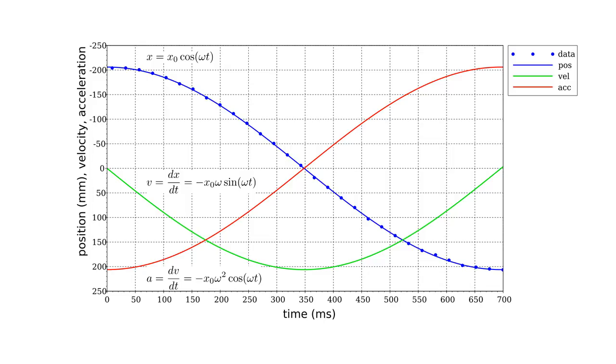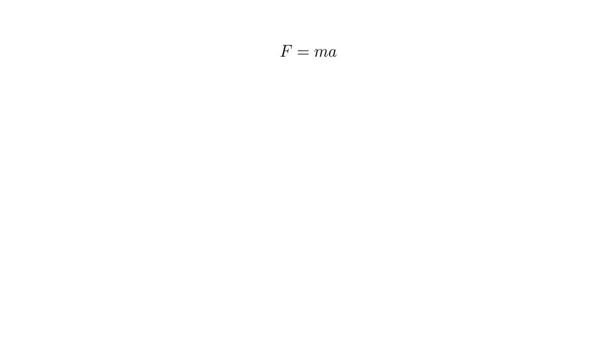Let's work out the constants of proportionality needed to satisfy F equals ma. F is minus kx, which is minus k x_0 cos(ωt). Ma is m times minus x_0 ω² cos(ωt). Canceling a common factor of minus x_0 cos(ωt), we're left with k equals mω².